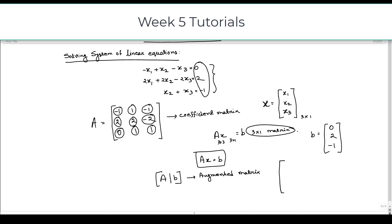The augmented matrix is: first row [−1, 1, −1 | 0], second row [2, 2, −2 | 2], third row [0, 1, 1 | −1], with a line separating the coefficient portion from B. This is our augmented matrix for this system of linear equations.